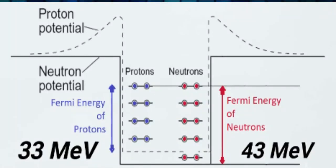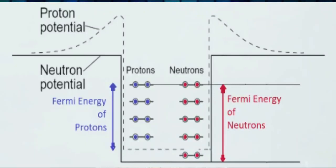In the ground state configuration, the highest occupied state has a certain energy, and this energy minus the lowest state energy is called the Fermi energy of the system. The formula to calculate the Fermi energy is: E_F = (ℏ²/2m) × (3π²ρ)^(2/3). The Fermi energy of the neutron is 43 MeV and the Fermi energy of the proton is 33 MeV. The difference arises because the number of neutrons is greater than the number of protons, making the neutron density higher, and therefore the Fermi energy of the neutron is greater.